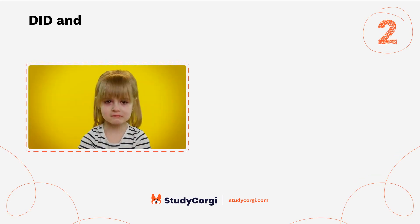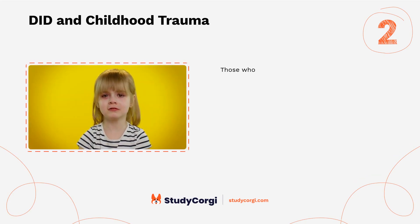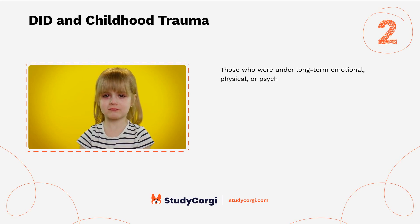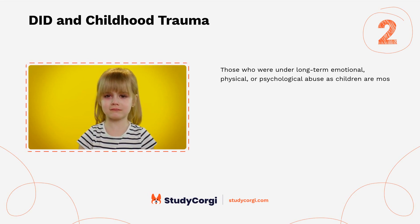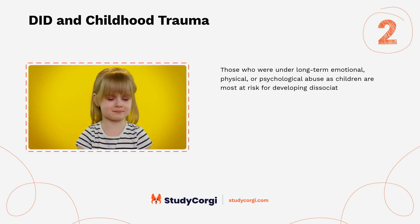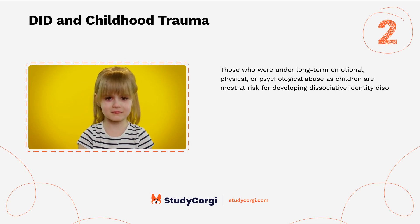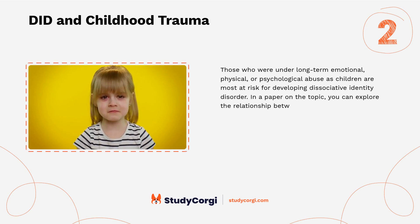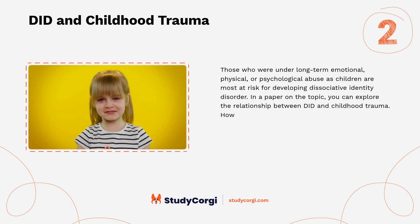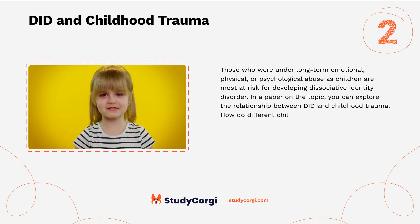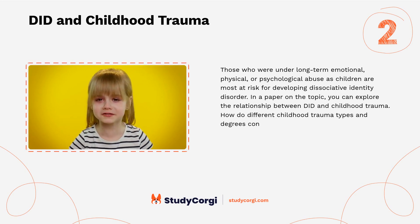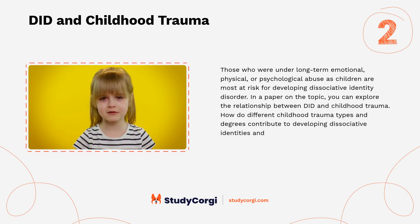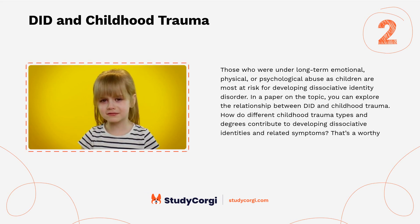Those who are under long-term emotional, physical, or psychological abuse as children are most at risk for developing dissociative identity disorder. In a paper on the topic, you can explore the relationship between DID and childhood trauma. How do different childhood trauma types and degrees contribute to developing dissociative identities and related symptoms? That's a worthy research question.